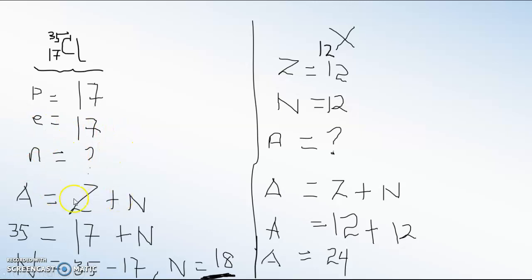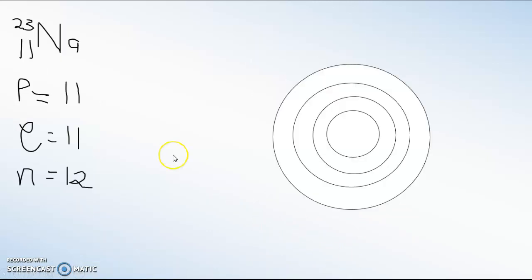Sometimes you can be given the atomic number and the number of neutrons and asked to find the mass number. Again use the relation A = Z + N, put in your figures and solve for the mass number — in one example here we get 24. Now let's draw the atomic structure for sodium. We have determined that sodium has 11 protons, 11 electrons, and 12 neutrons.